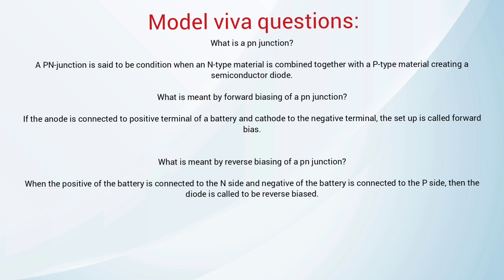Model questions. What is a P-N junction diode? A P-N junction is the condition when an N-type material is combined with a P-type material, creating a semiconductor diode. What is meant by forward biasing of a P-N junction? If the anode is connected to the positive terminal of a battery and cathode to the negative terminal, the setup is called forward biasing.